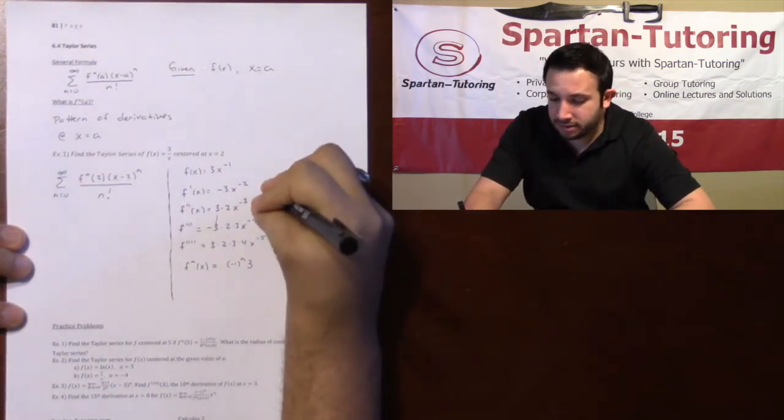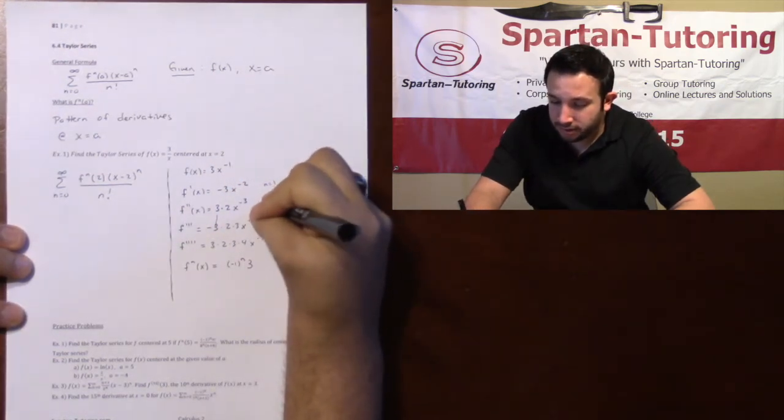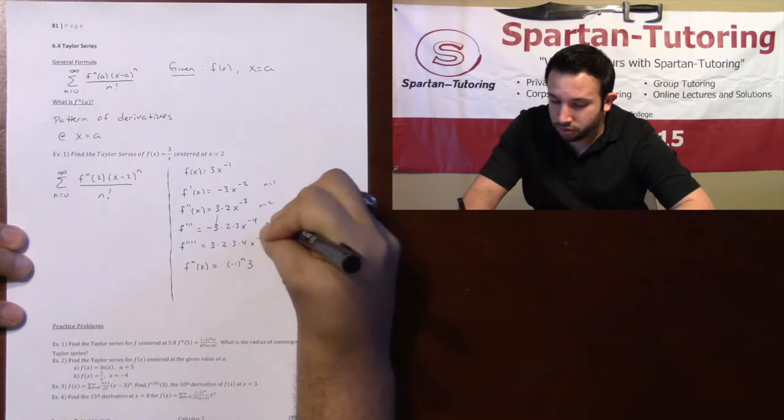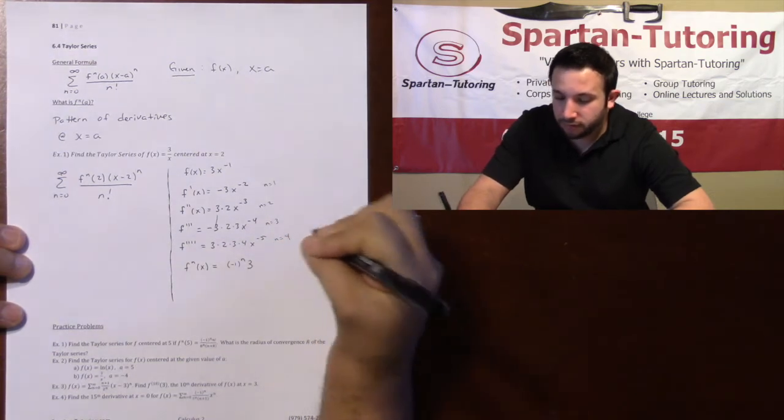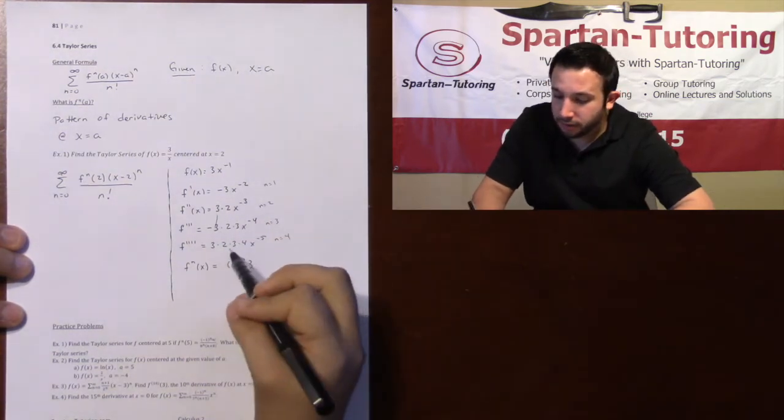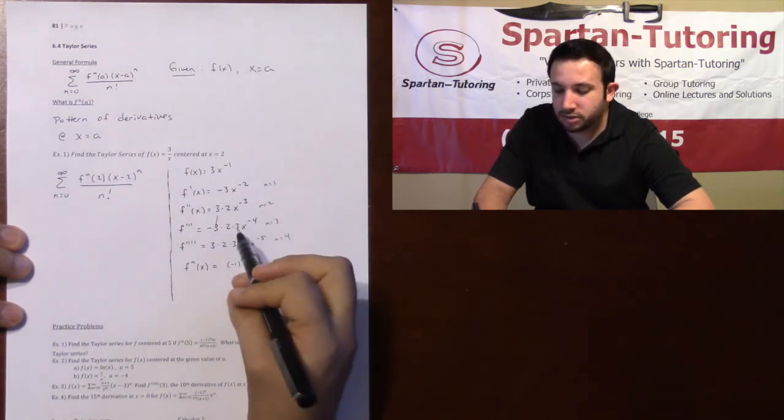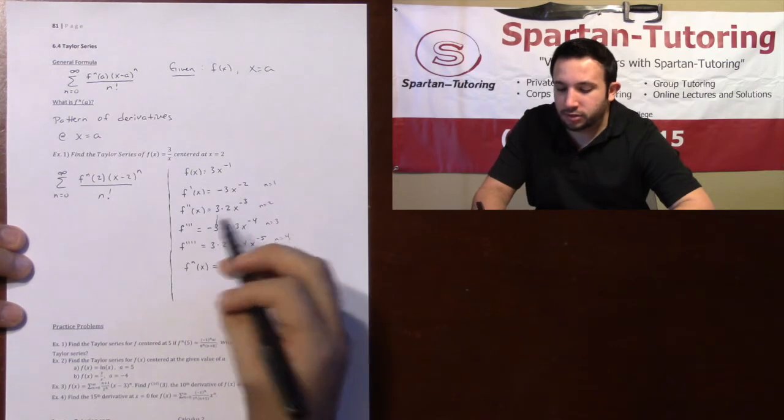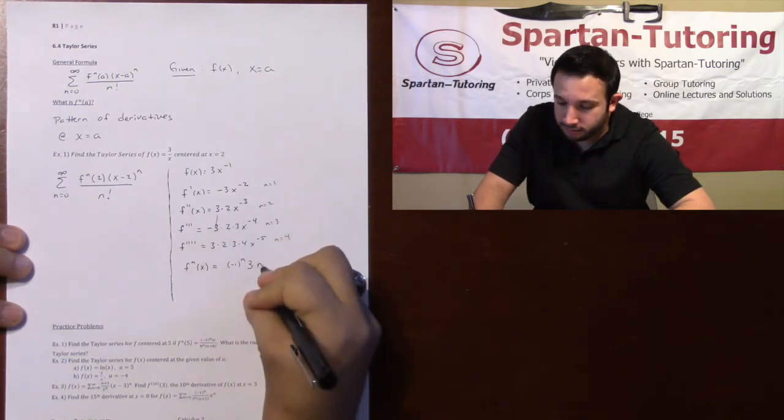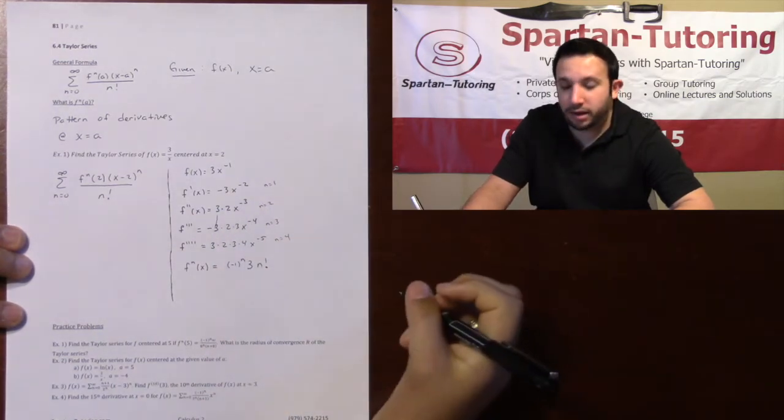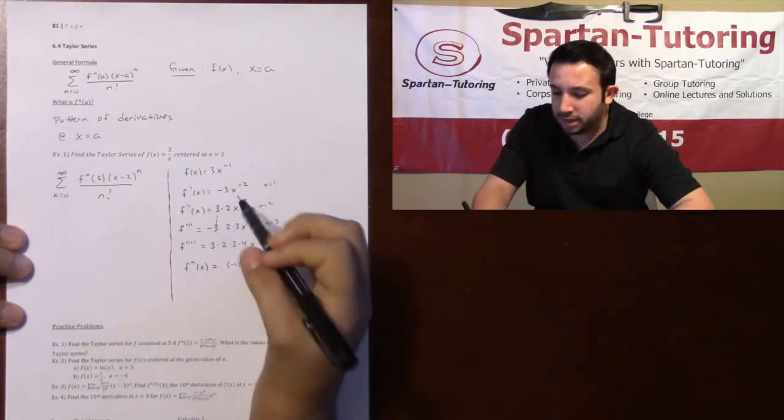Now, your first derivative, just as a heads up, this is when n is equal to 1. Second derivative is n equals 2. Third derivative, n equals 3. Fourth derivative, n equals 4. And notice here for n equals 4, I have a 2 times 3 times 4. That's 4 factorial. 2 times 3, that's 3 factorial. 2, that's 2 factorial. You've got an n factorial.